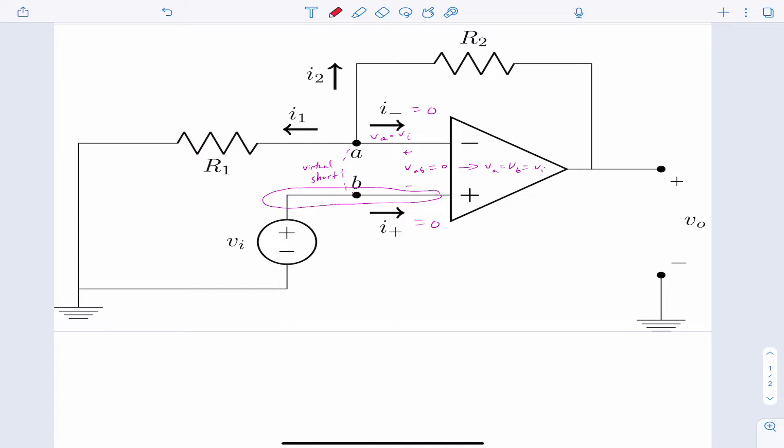So this leads to more information that is useful to us. For example, if we did KCL here at node A, we would have the sum of all currents leaving be zero. And I could also add the I minus. However, we know that I minus is zero. So we will just ignore it.